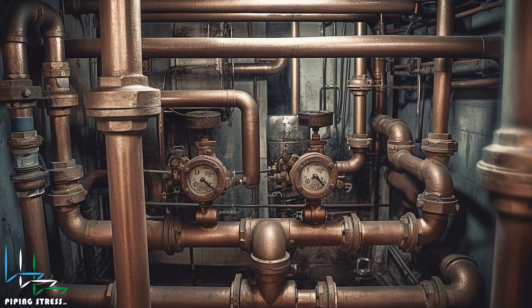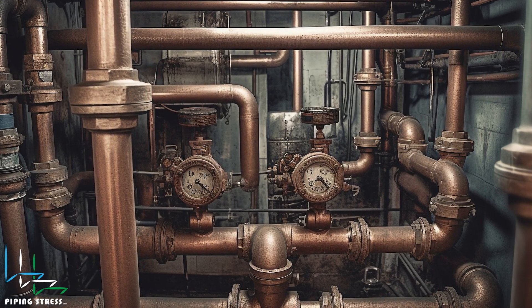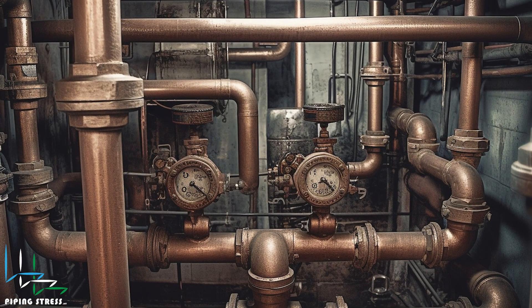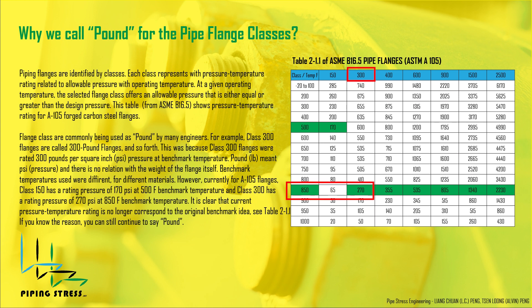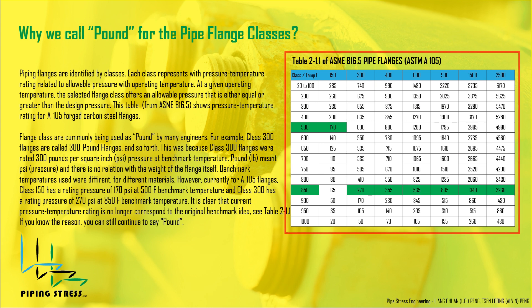Previously, benchmark temperatures used were different for different materials. Currently, for A-105 flanges, class 150 has a rating pressure of 170 PSI at a 500°F benchmark temperature, and class 300 has a rating pressure of 270 PSI at an 850°F benchmark temperature. It is clear that the current pressure temperature rating no longer corresponds to the original benchmark idea, as you can see on table 2.1.1.